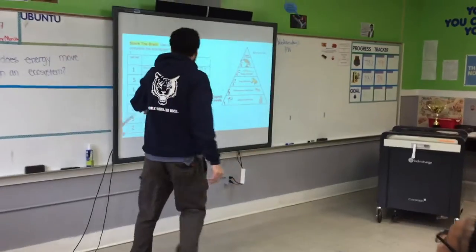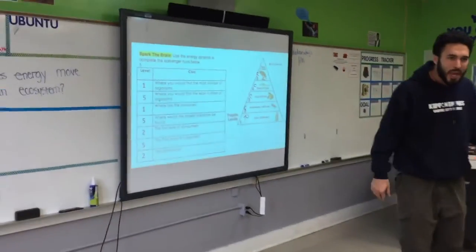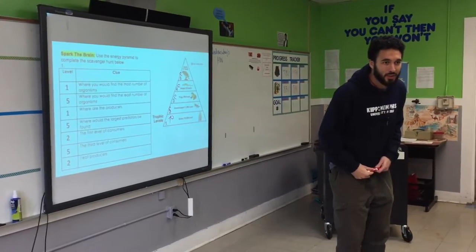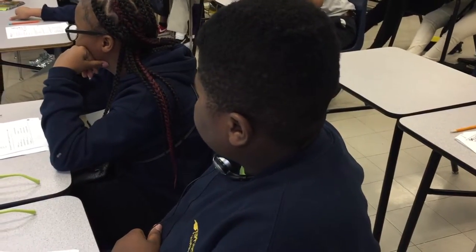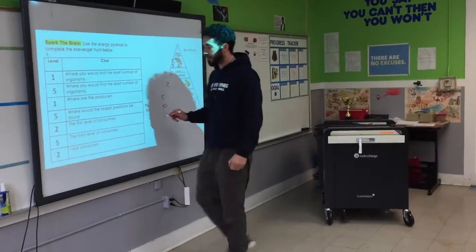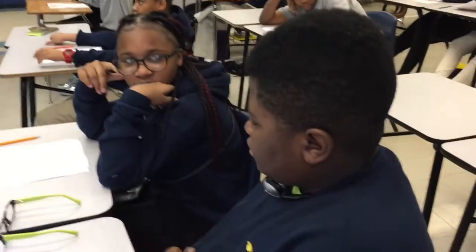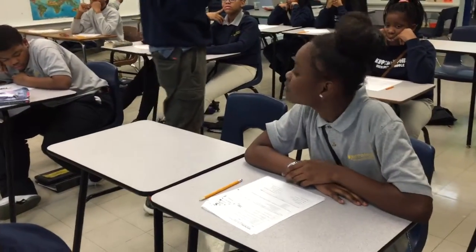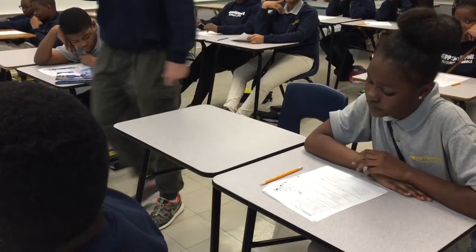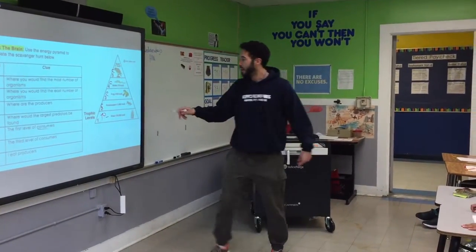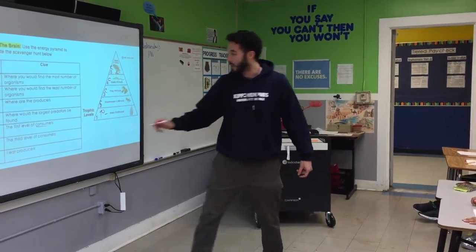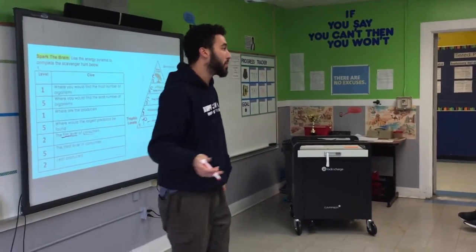When we look at the first level of consumers, are we talking about producers? No. What type of organisms are we talking about? The lowest, like the grass. But is grass a consumer? How does grass get food? It makes its own food — that's what we're looking for. So producers at the bottom make their own food; they don't eat anything. When we look for our first level of consumers, we're not talking about producers.